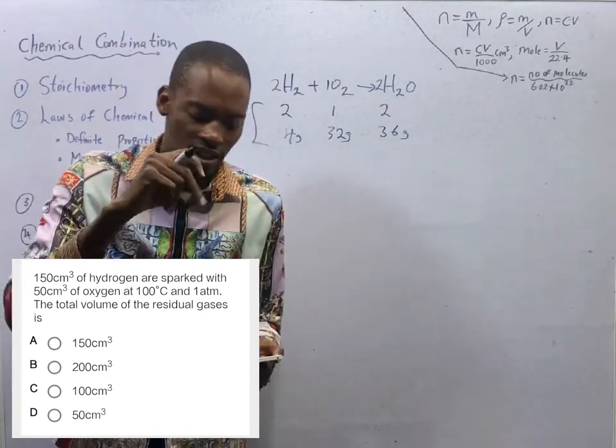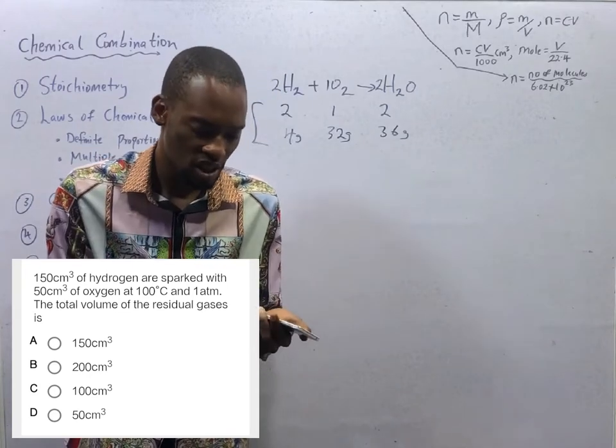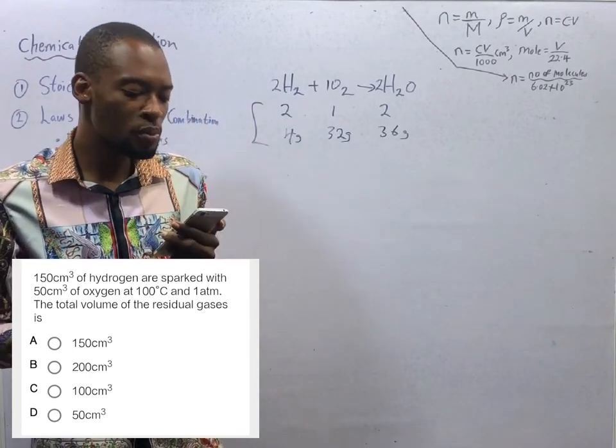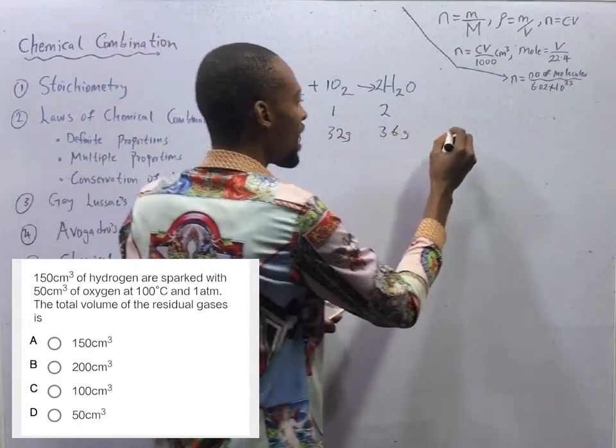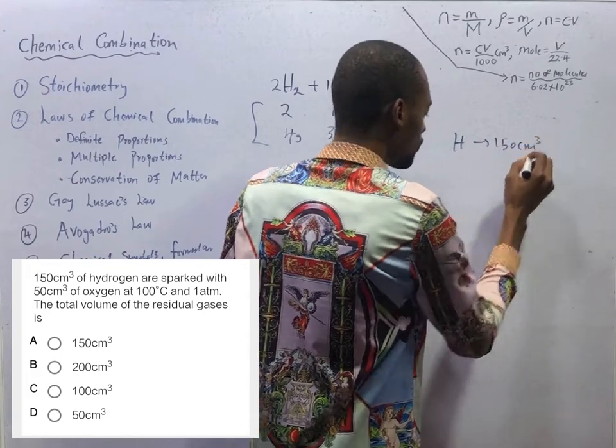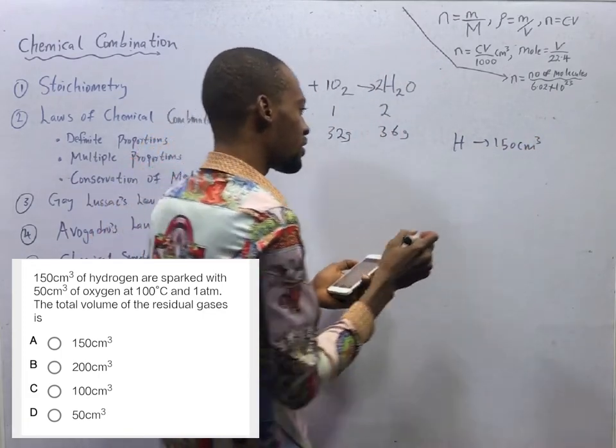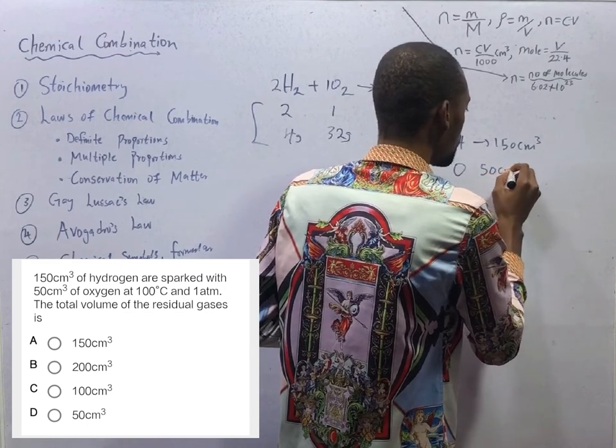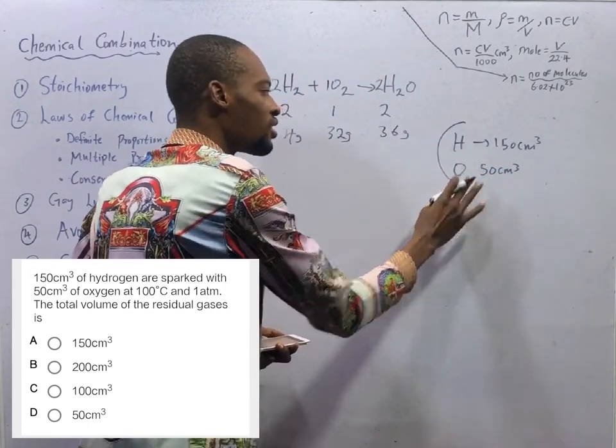This is what should be. Now, what is, is what we are given in the equation. In the equation, we are given volume 150 cm³ of hydrogen, 150 cm³. Oxygen, 50 cm³. This is what is.